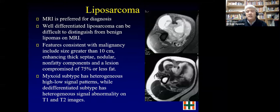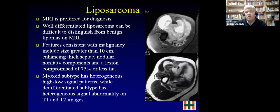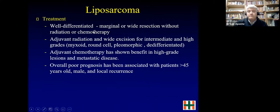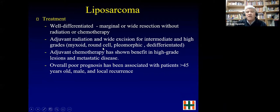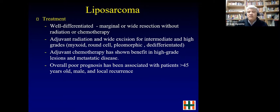Sometimes well-differentiated liposarcoma is very difficult to differentiate from a lipoma, but the treatment is the same — just resection. If the tumor is greater than 10 centimeters with mixed components on MRI (fat mixed with other tissue), suspect a medium or high-grade liposarcoma. For well-differentiated liposarcoma you can perform marginal or wide resection without radiation or chemo. For myxoid or higher grade tumors, adjuvant radiation is given. Chemotherapy in high-grade tumors does not show big benefits. Poor prognosis factors are older age, male sex, and local recurrence.